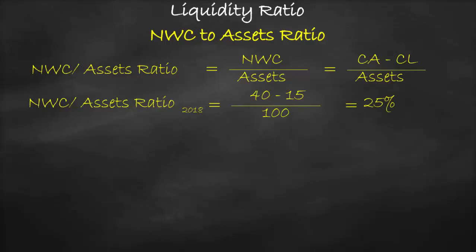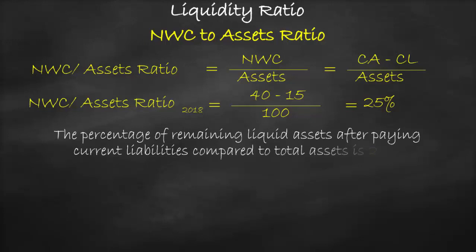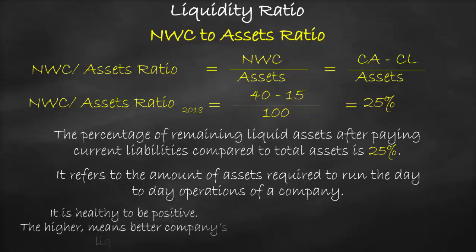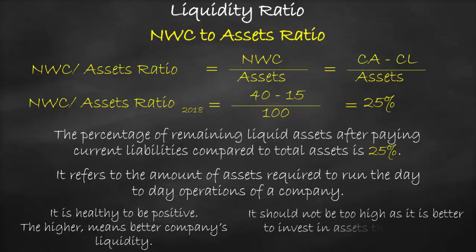The unit of the net working capital to total assets ratio is a percentage. This means that the percentage of remaining liquid assets after paying the current liabilities compared to total assets is 25%. It refers to the amount of assets required to run the day-to-day operations of a company. A positive liquidity ratio indicates that the company can meet its short-term obligations. The ratio should not be too high, however, as it is better to invest in assets that generate a higher return, such as long-term assets, while short-term assets generate a lower return.